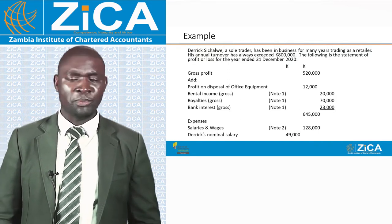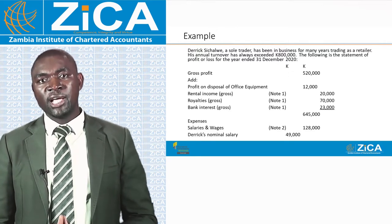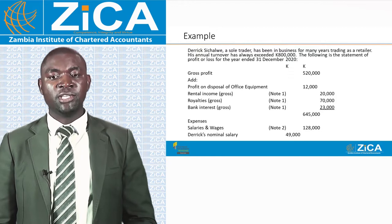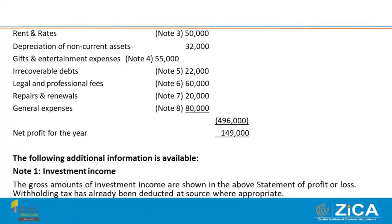Expenses charged in the statement of profit or loss include: salaries and wages, a dedicated nominal salary, rent and rates of 50,000 kwacha, depreciation of non-current assets of 32,000 kwacha, gifts and entertainment expenses of 55,000 kwacha, recoverable debts of 22,000 kwacha, legal and professional fees of 60,000 kwacha, repairs and renewals of 20,000 kwacha, and general expenses of 8,000 kwacha. Total expenses come to 496,000 kwacha, giving a net profit of 149,000 kwacha.